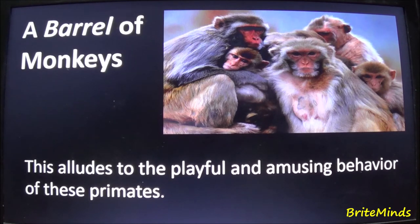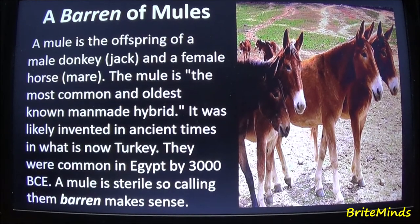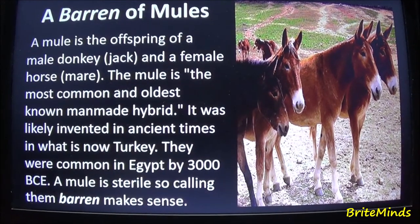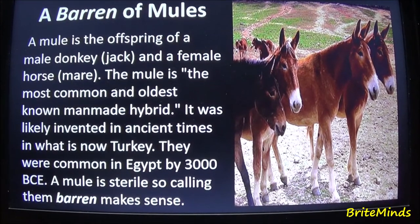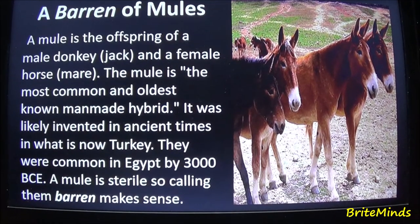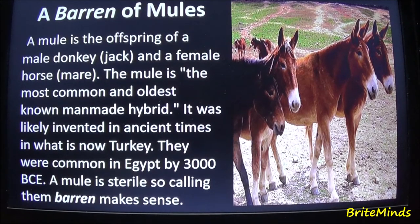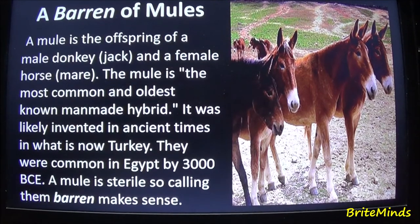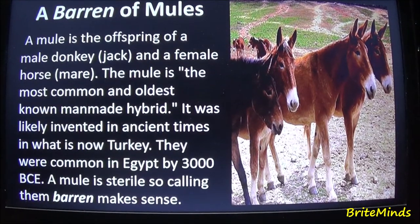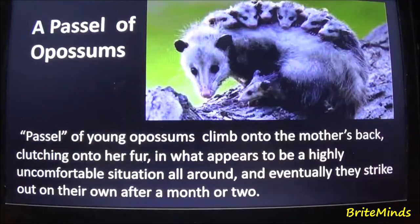A group of mules is called a barren of mules. A mule is the offspring of a male donkey (jack) and a female horse (mare). The mule is the most common and oldest known man-made hybrid, likely invented in ancient times in what is now Turkey, and was common in Egypt by 3000 BCE. A mule is sterile, so calling them barren makes sense.